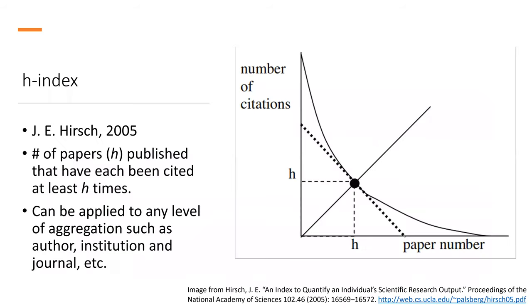First, let's begin with H-index. The H-index was introduced by Hirsch in 2005. It can be defined as the number of papers published that have each been cited at least H times. This indicator combines the number of papers and the number of citations in one index. The figure on the right side shows the intersection of the 45-degree line with the curve giving the number of citations versus the number of papers.